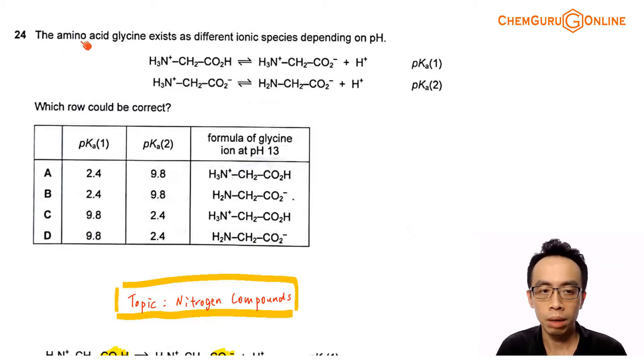Now question 24: the amino acid glycine exists as different ionic species depending on pH. So we have two dissociations here involving pKa1 and pKa2. Later, we will look at each one in detail. Which row could be correct? We want to assign the pKa values for pKa1 and pKa2.